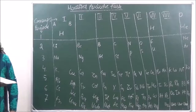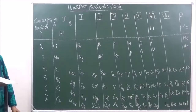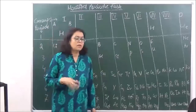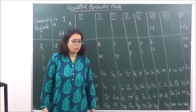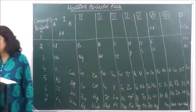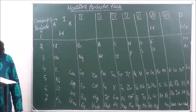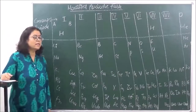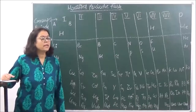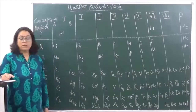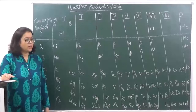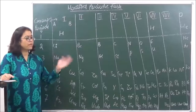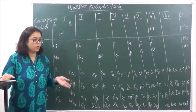When this table was given, there were many abnormalities seen in the previous table. There were many anomalous pairs, the first of which was argon and potassium. In the previous table, the atomic mass of argon was 40 and the atomic mass of potassium was 39, yet potassium was placed before argon in the periodic table.